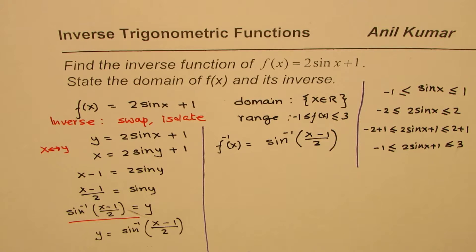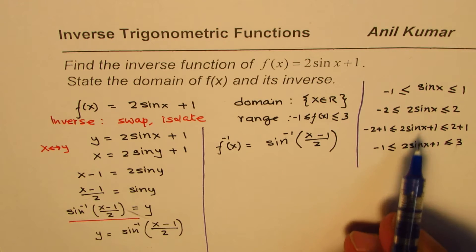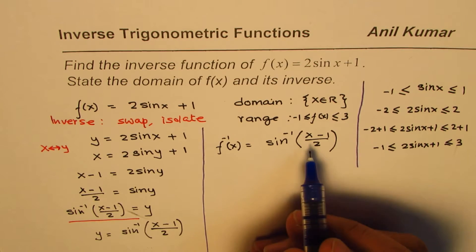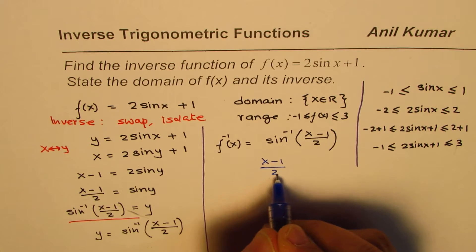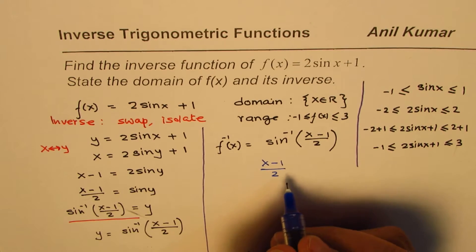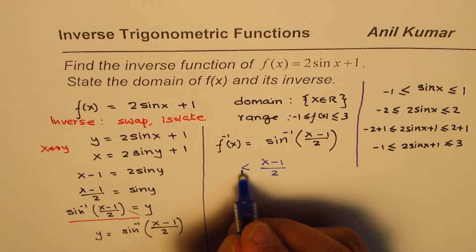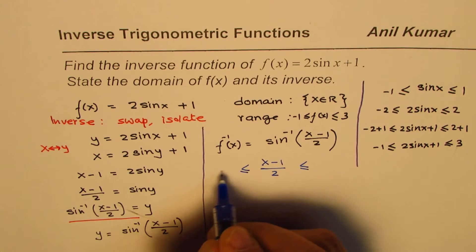Now, as you know, this inverse function should have restricted domain and range. So, we need to find that restriction now. So, let's find it. The restriction is that (x - 1)/2, it should be between plus and minus 1.